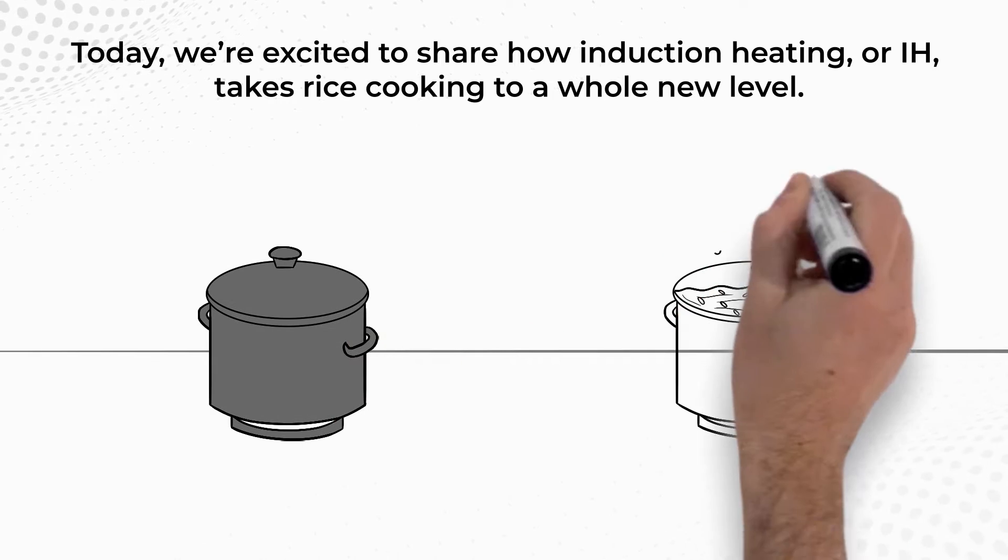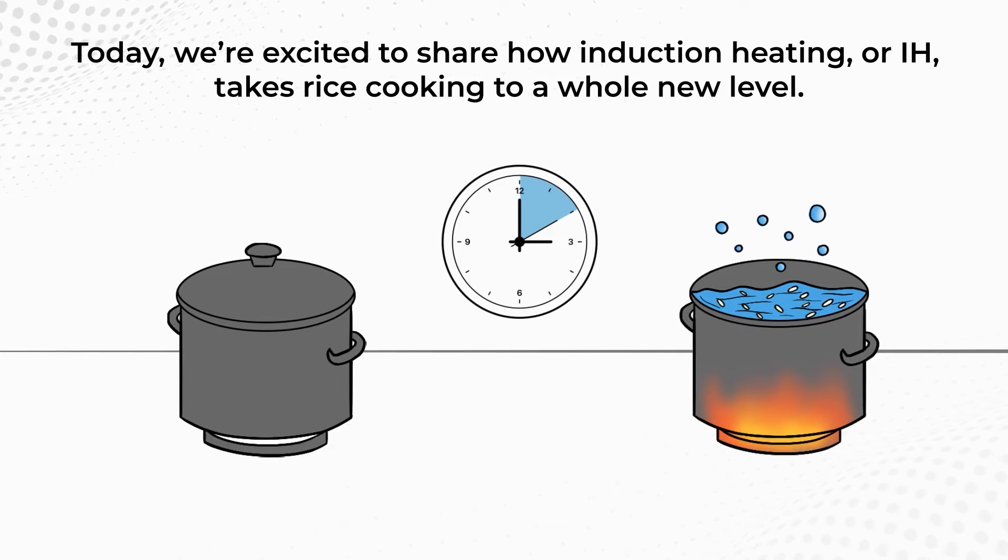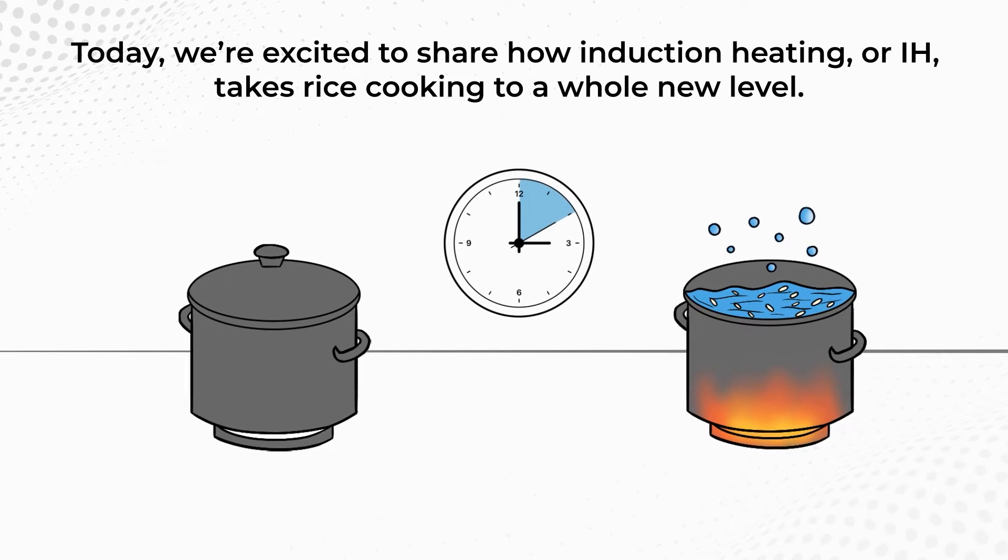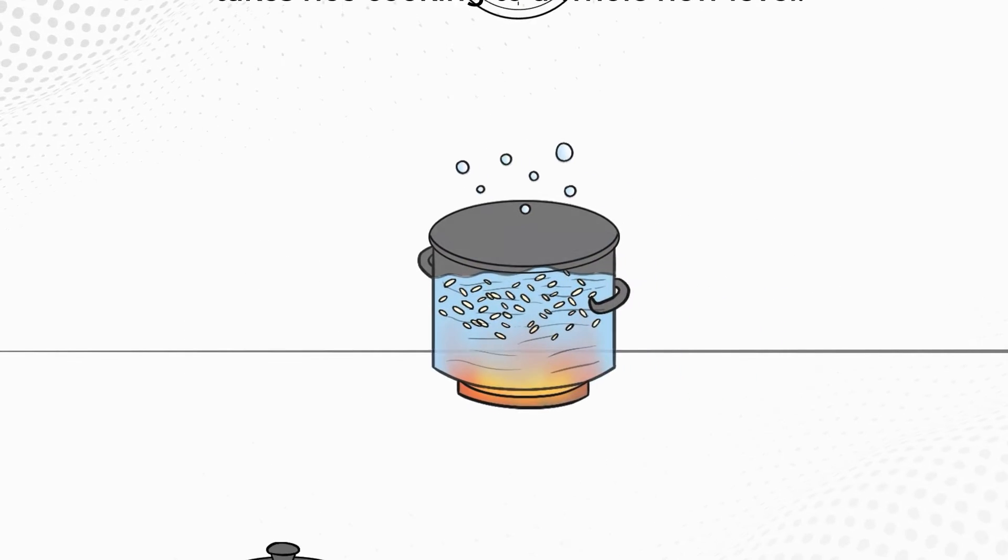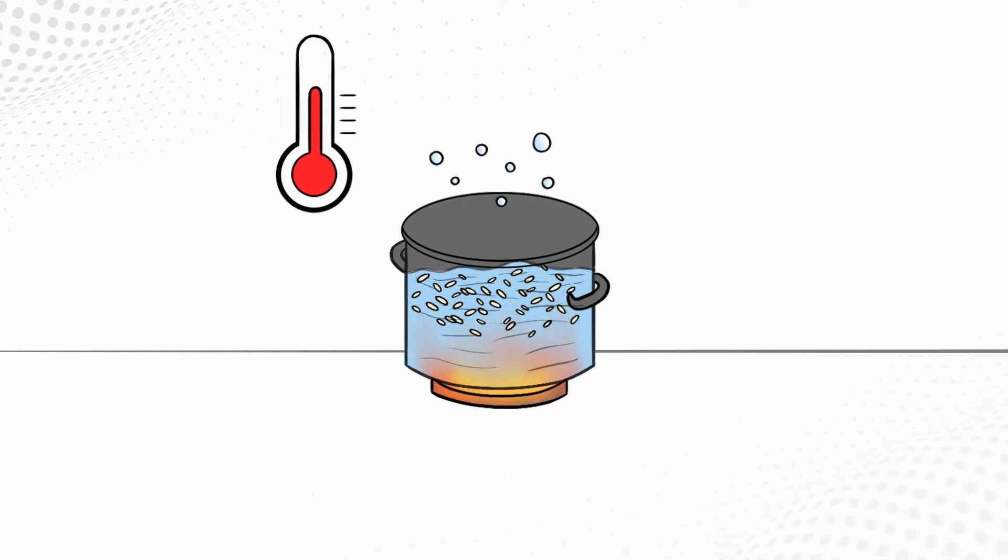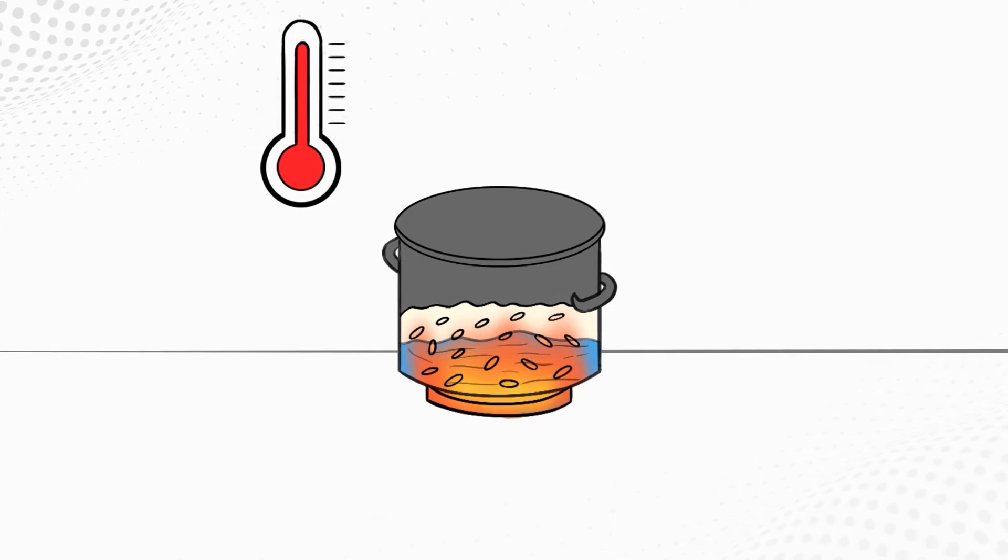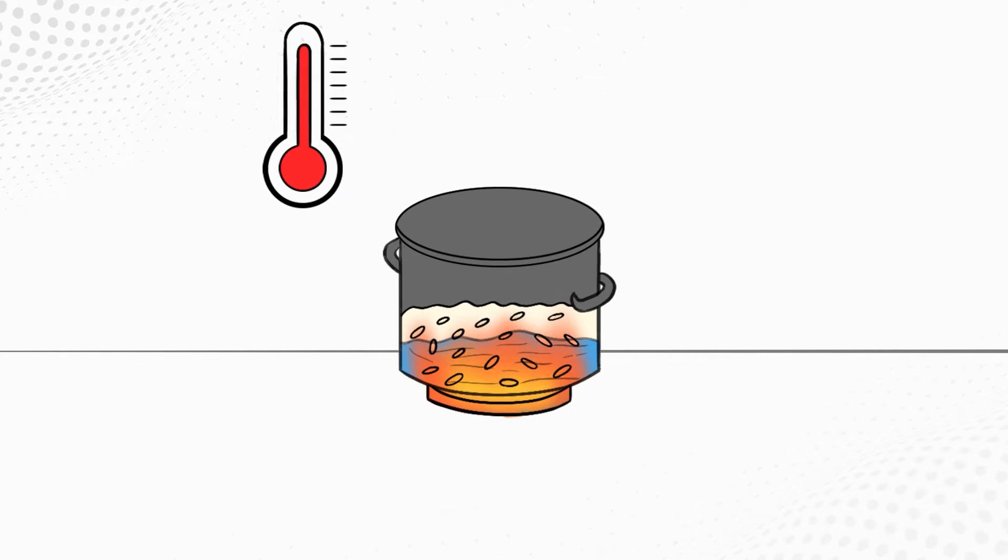Many know that properly cooking rice involves regulating the heat through different stages. It starts with soaking up water and then bubbling as it comes to a boil. Next is the hissing stage, where you reduce heat for tender grains. As the water reduces, you increase the heat again to finish cooking before steaming to fluffy perfection.